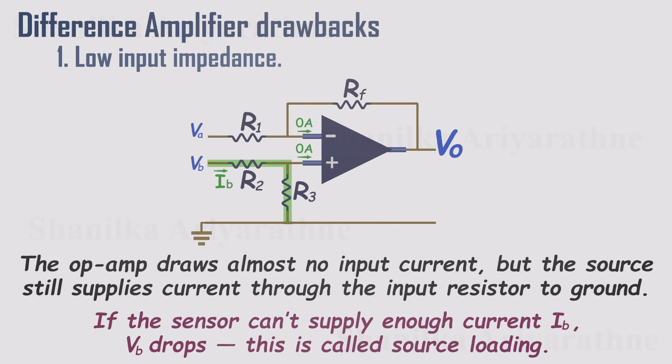That means the signal source has to supply this extra current. If the sensor can't provide it, the input voltage, V1, ends up lower than it should be. This is called loading the source.